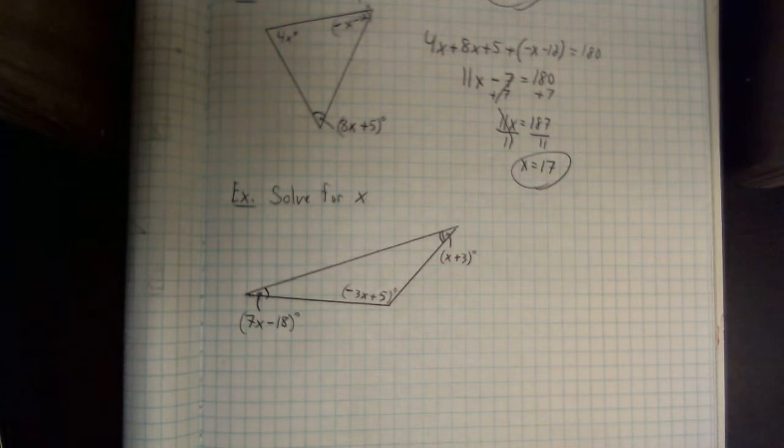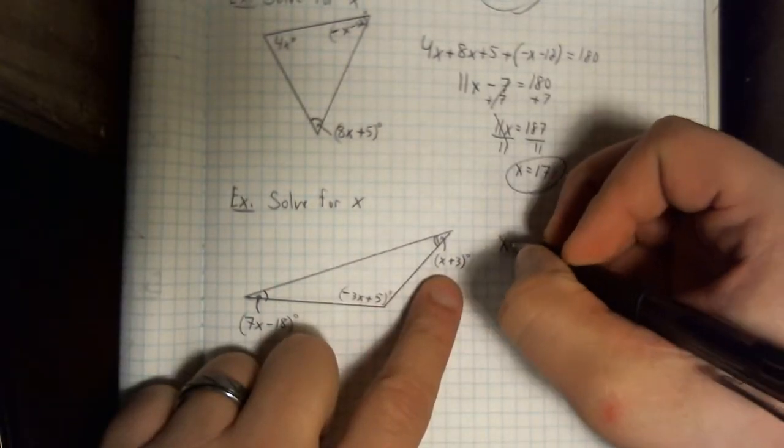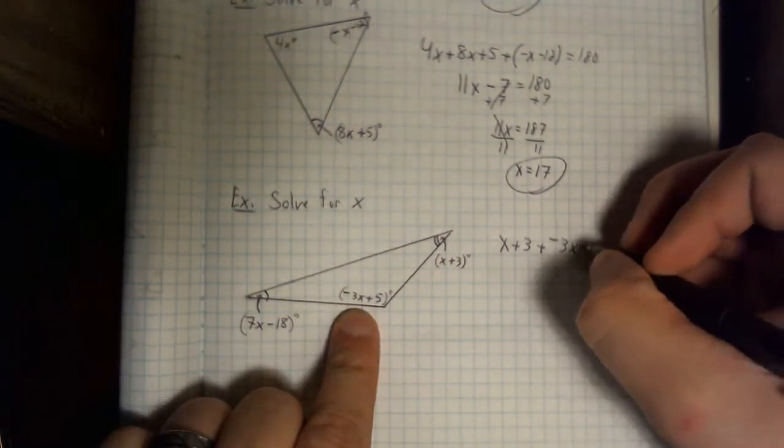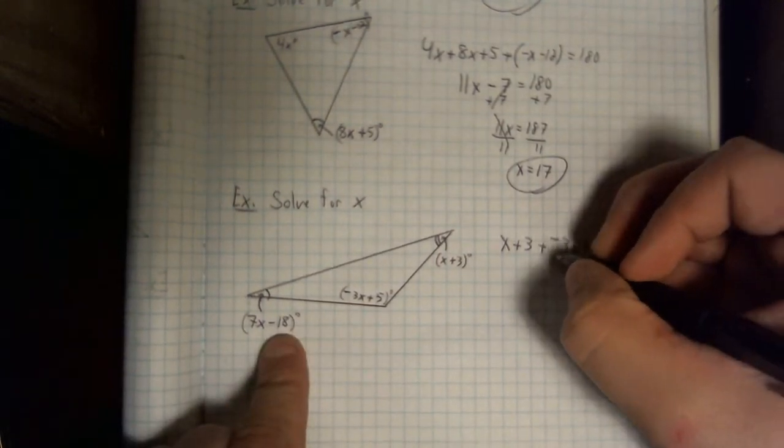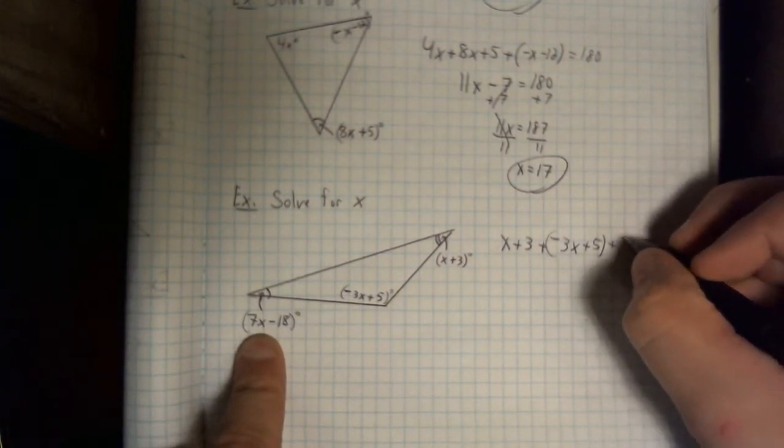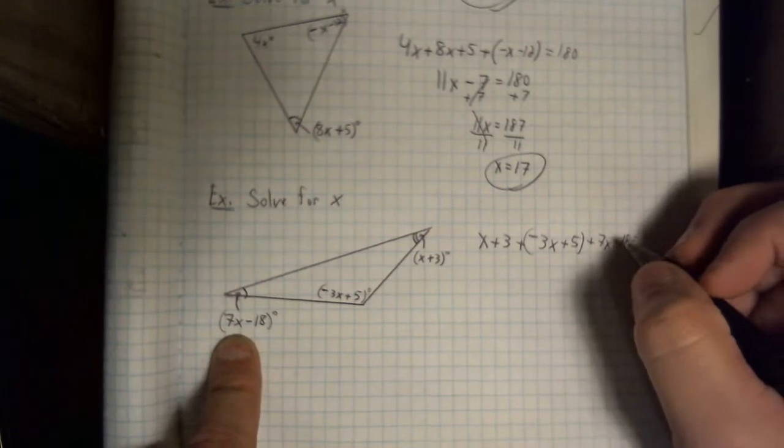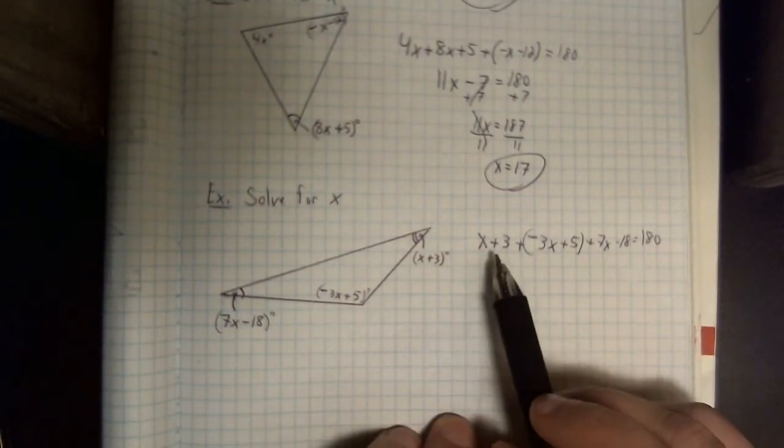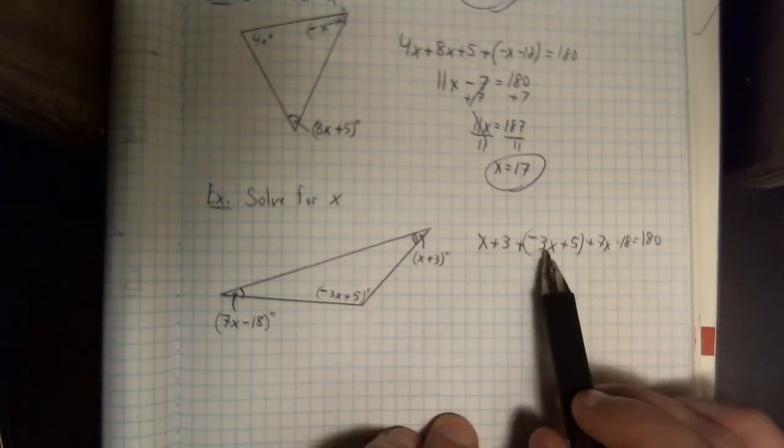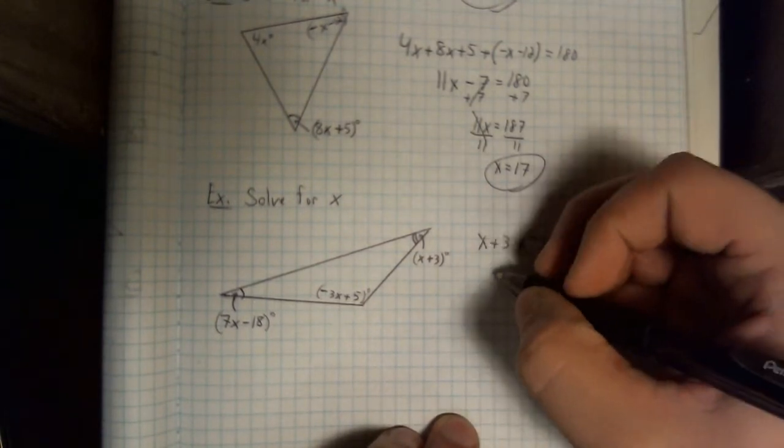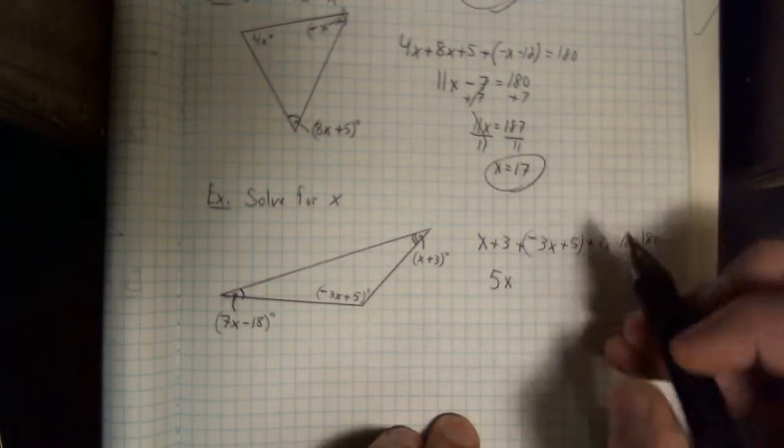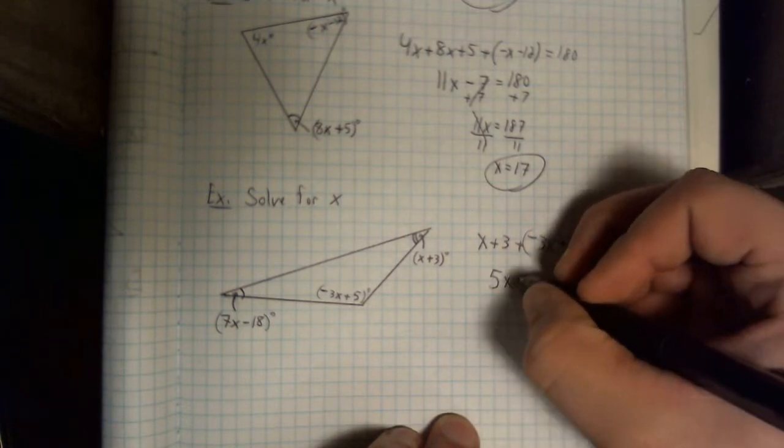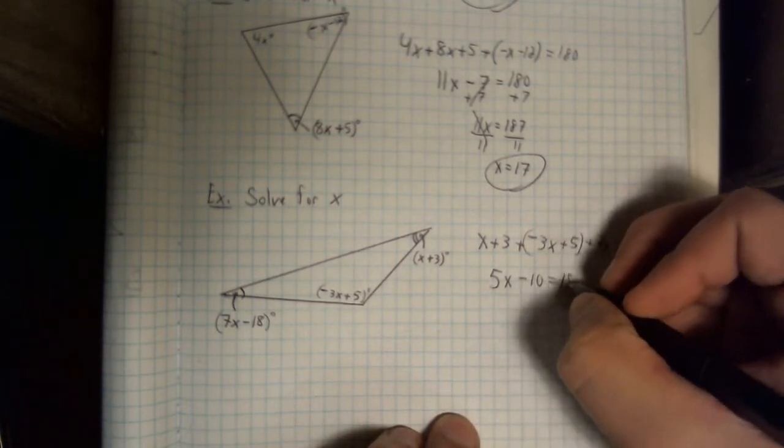Alright, let's see what you did here. We know that we've got to add x plus 3. We know that we have to add negative 3x plus 5. And we know we have to add 7x minus 18. And that's all going to add up to our 180 degrees according to our theorem. Combine like terms. 1x, negative 3x, and 7x. That's 5x. 3, 5, and negative 18 gives us negative 10. We have not touched the other side yet.